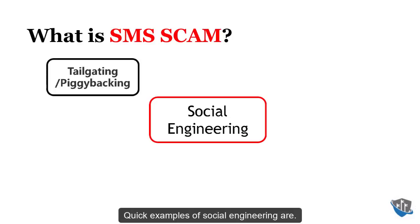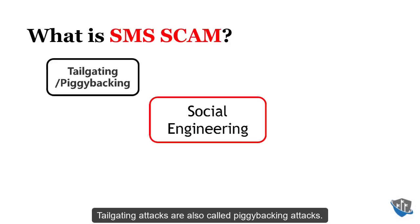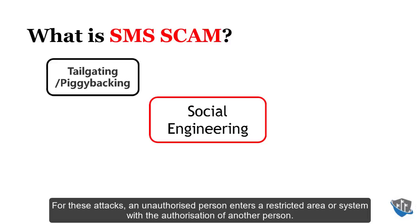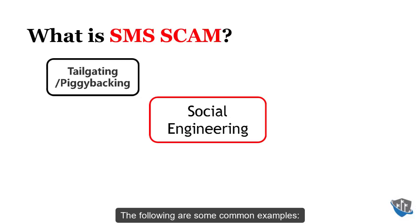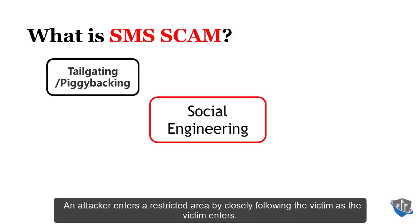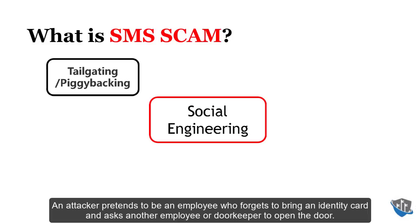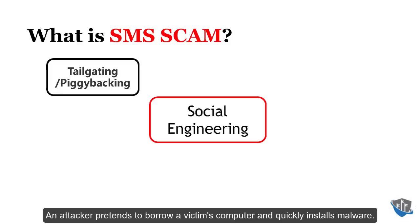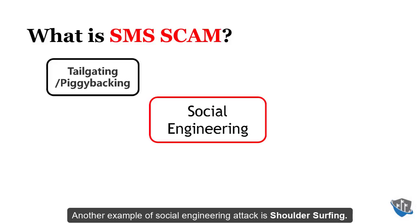Quick examples of social engineering: first, tailgating and piggybacking attacks. Tailgating attacks are also called piggybacking attacks. An unauthorized person enters a restricted area or system with the authorization of another person. For example, an attacker enters a restricted area by closely following the victim, or pretends to be an employee who forgot their identity card, or borrows a victim's computer and quickly installs malware.